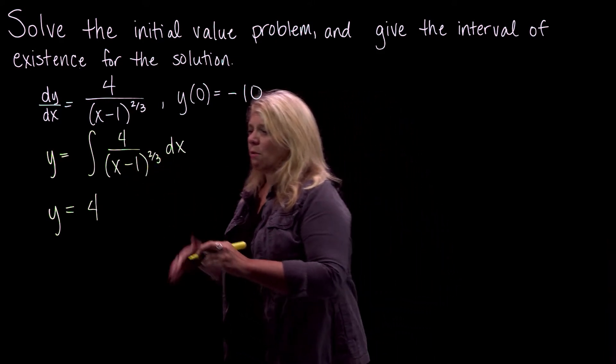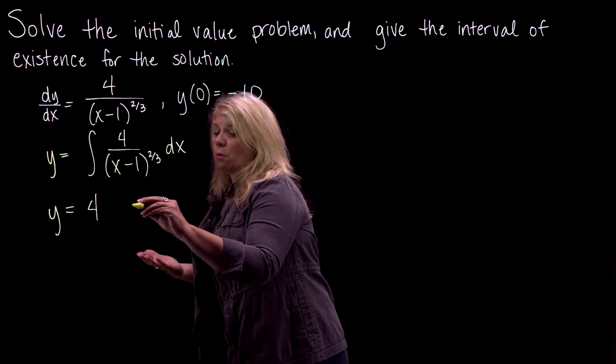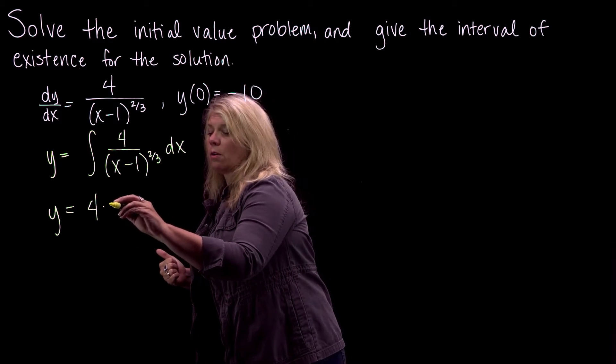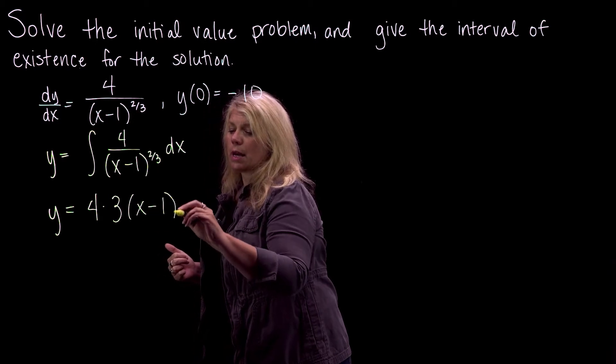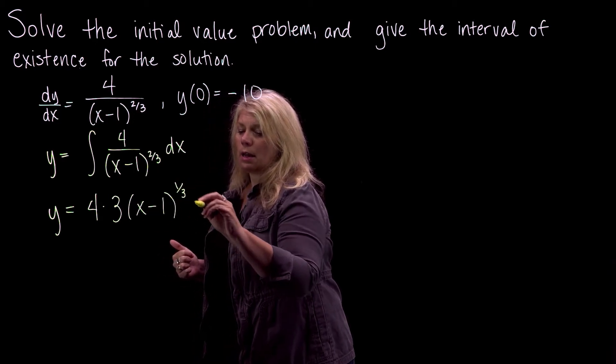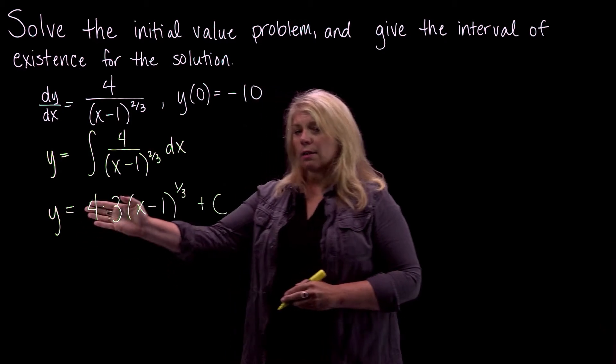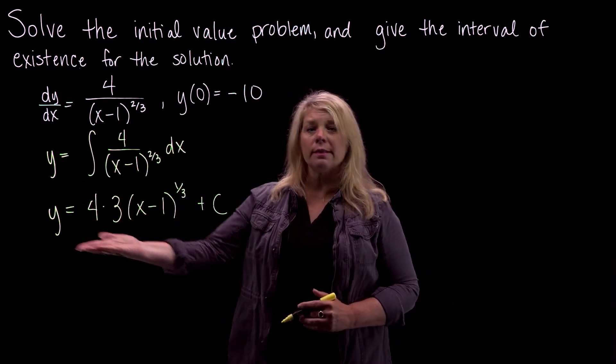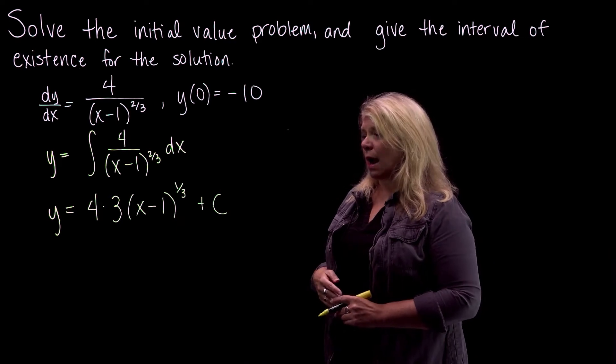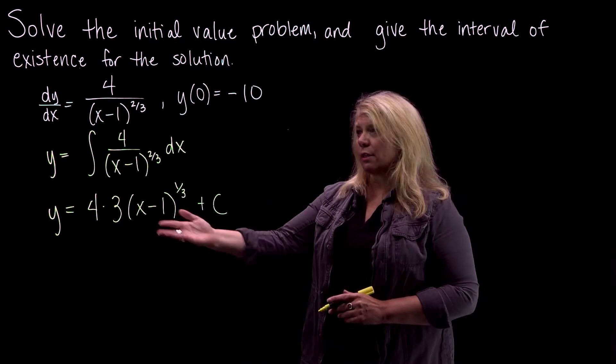So doing that integration, I'd add 1 to that. So I'd have u to the 1/3 over 3, or times 3, times u, which was x minus 1 to the 1/3, and plus C. Alright, so this is our general solution to our differential equation. This is an explicit solution because it's solved for y.